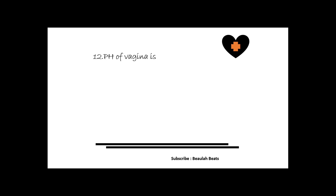The twelfth question is: what is the pH of the vagina? Normal vaginal pH is between 3.8 to 4.5, and the answer is acidic.